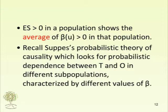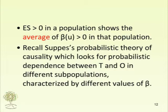If the effect size is greater than zero in a study population, that shows that the average of beta is greater than zero in that population. That's what we actually had in the conclusion of the RCT argument — it's the average value of beta. If the effect size is positive, the average value of beta is greater than zero. And beta represents in one fell swoop all the values and arrangements of the helping factors.